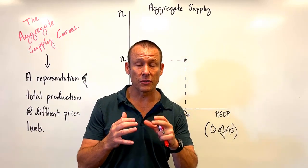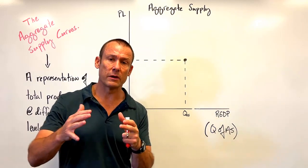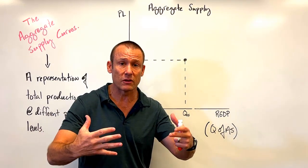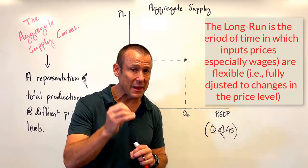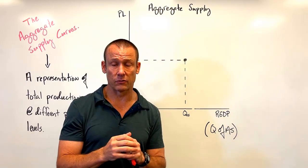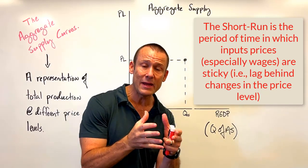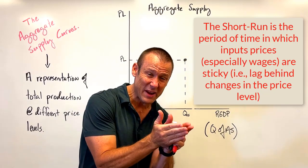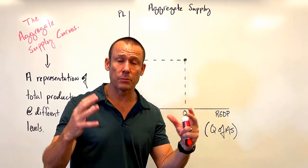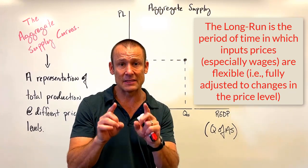When thinking about how the price level affects how much we produce, there's a time aspect. In the short run, input prices like wages have not changed yet. In the long run, we assume all input prices have fully adjusted to changes in the price level. So there are two forms: short-run aggregate supply, where wages lag behind price level changes, and long-run aggregate supply, where all input prices including wages have changed in proportion to the price level.